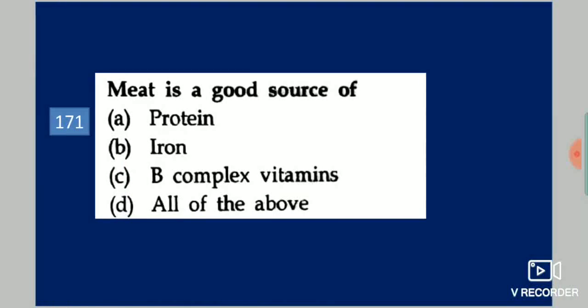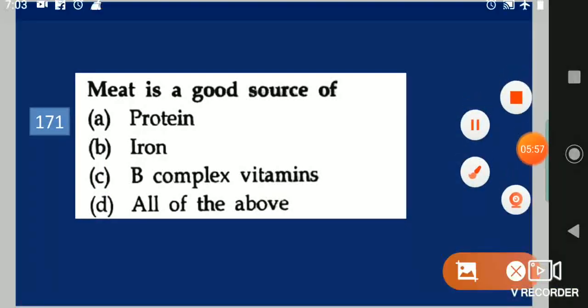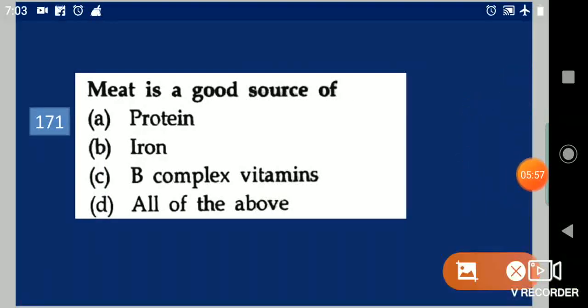Next question: Meat is a good source of dash. Your options are: protein, iron, B complex vitamins, or all of the above. Your answer is all of the above.